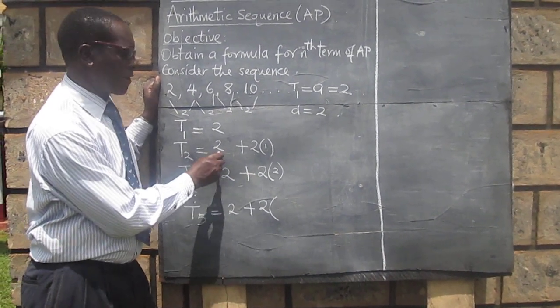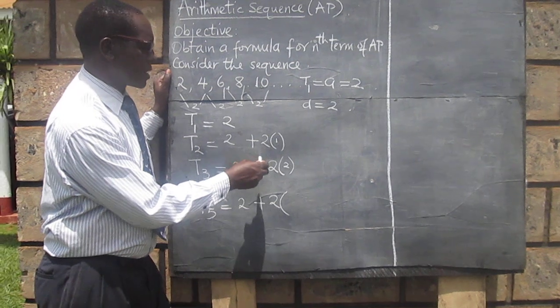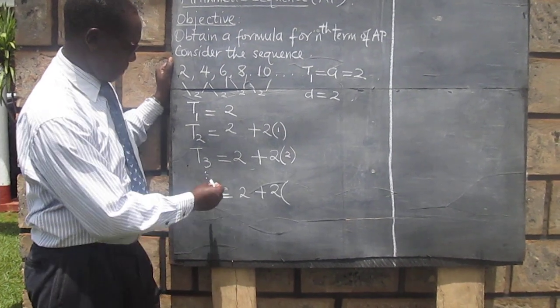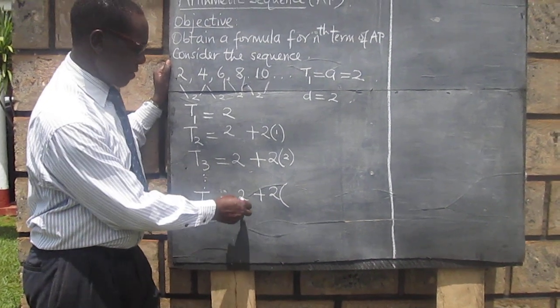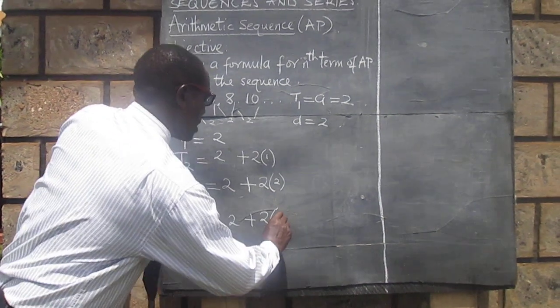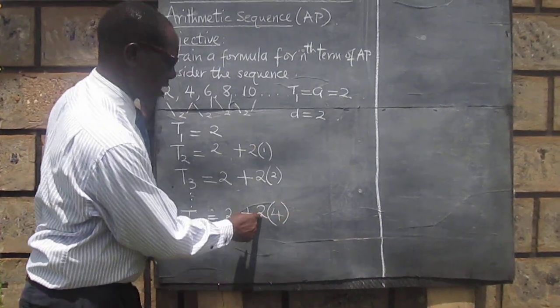Second term is first term plus 1 times the common difference. The fifth term, therefore, will be the first term plus 4 times the common difference.